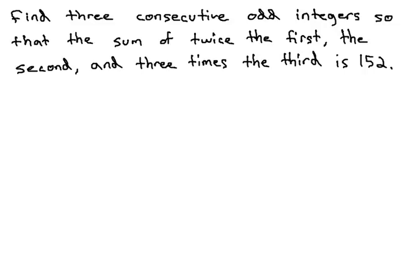In this video, we're going to find three consecutive odd integers that satisfy a set of given requirements. We're asked to find three consecutive odd integers so that the sum of twice the first, the second, and three times the third is 152.